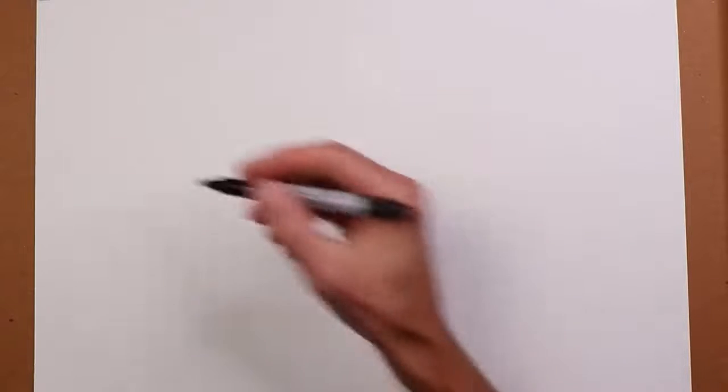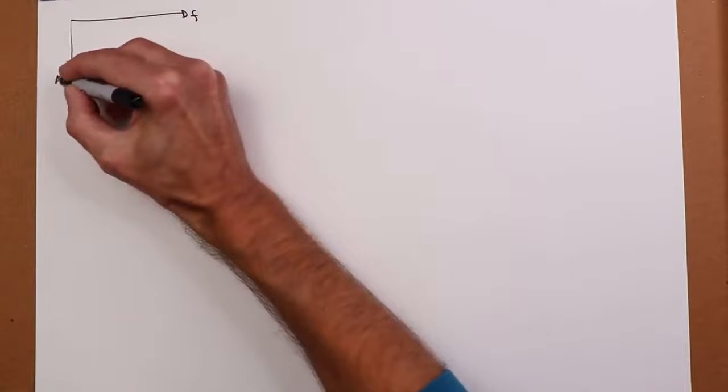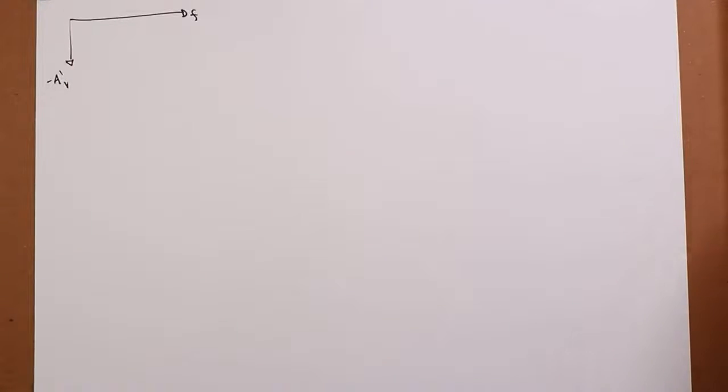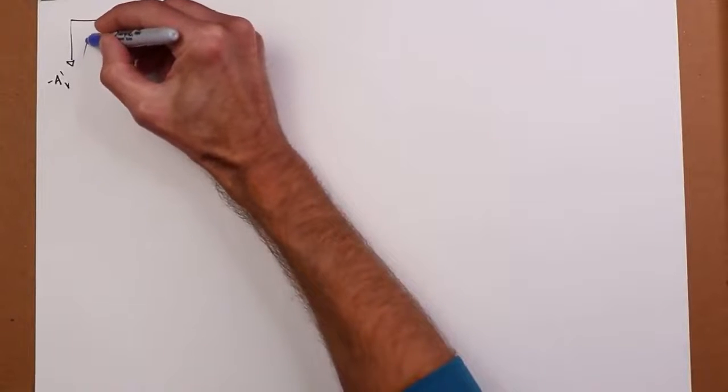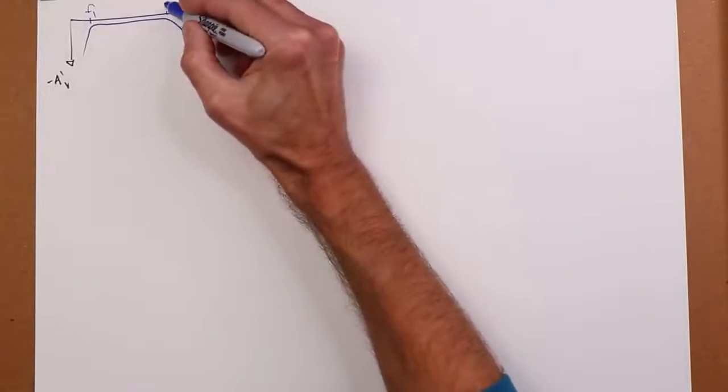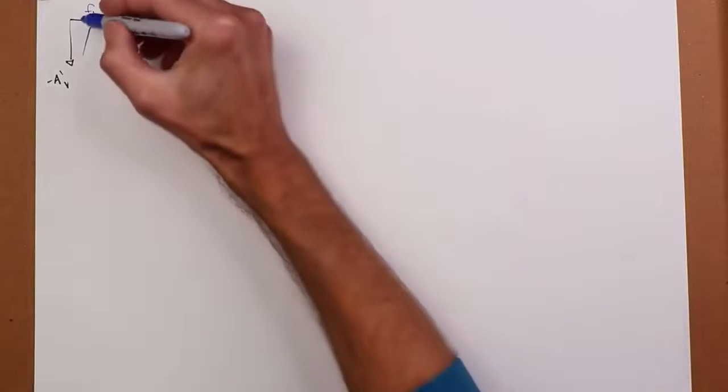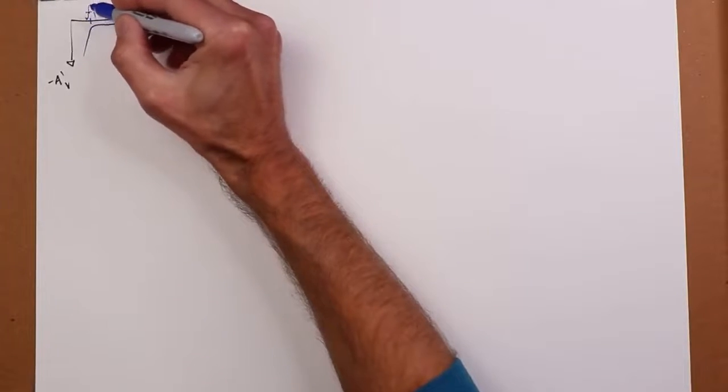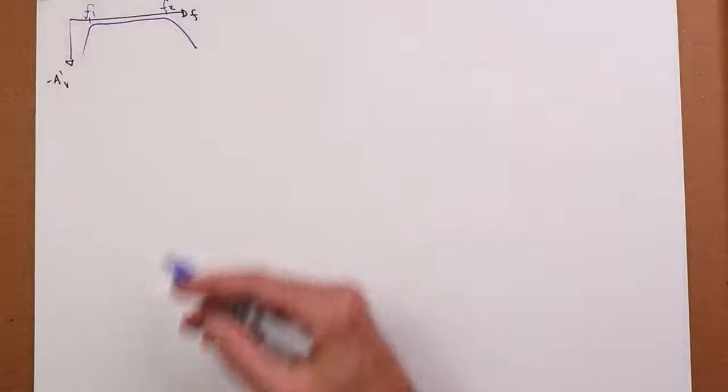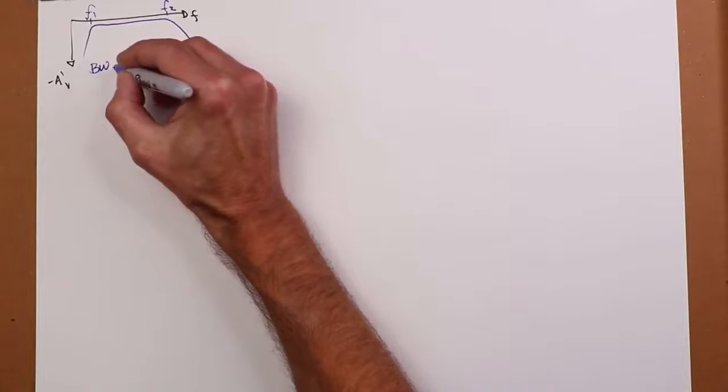Well, there's basically two different kinds of bandpass filters you can look at. Broadly speaking, we talk about wideband filters and narrowband filters. So you might have something where, if you were to plot the frequency response, you end up with something maybe like this. So you have a lower frequency, an f1, and a higher frequency, an f2, and they're pretty far apart.